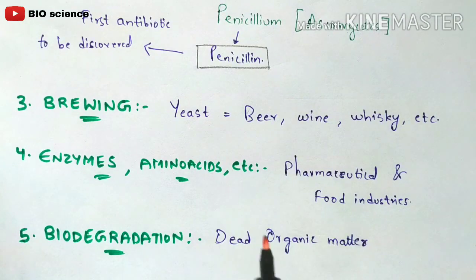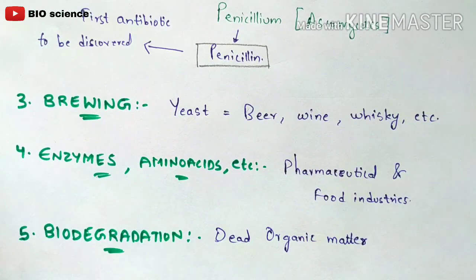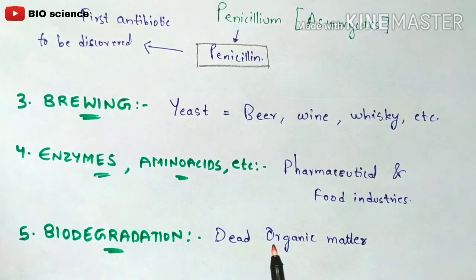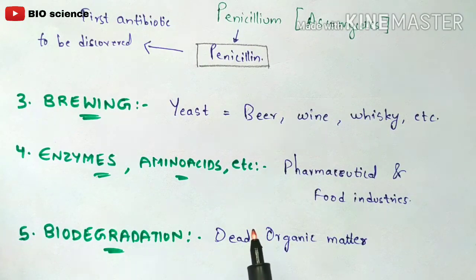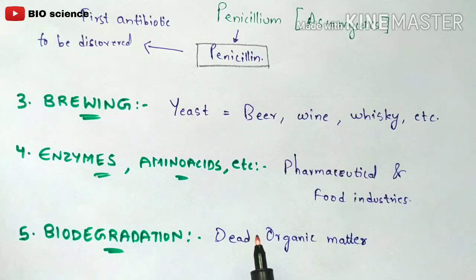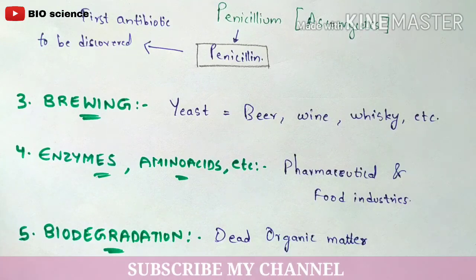The fifth use is biodegradation. Biodegradation is a process where dead and decaying organic matter — whether from plants, animals, or humans — buried in soil gets broken down. All organic matter in the body gets biodegraded such that only the skeleton remains in the soil. This process is carried out by fungi, which plays a major and vital role in biodegradation.